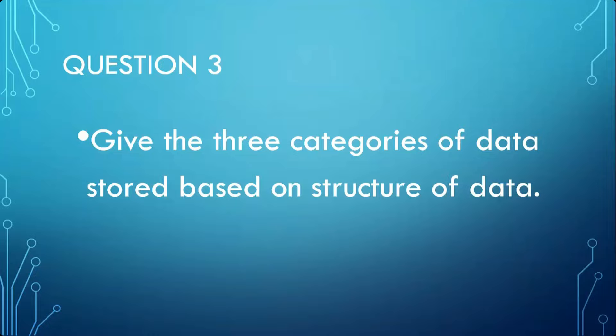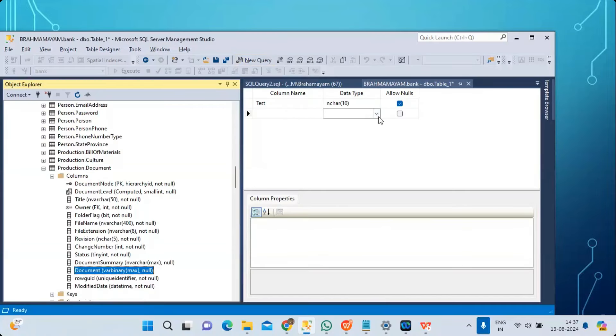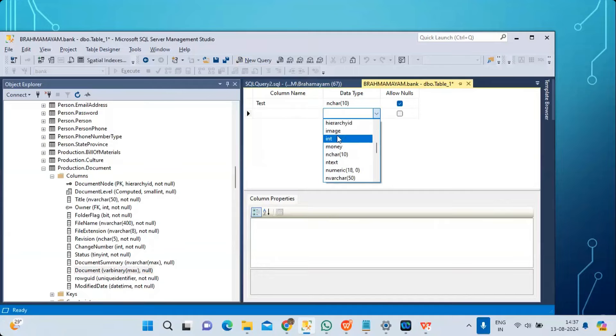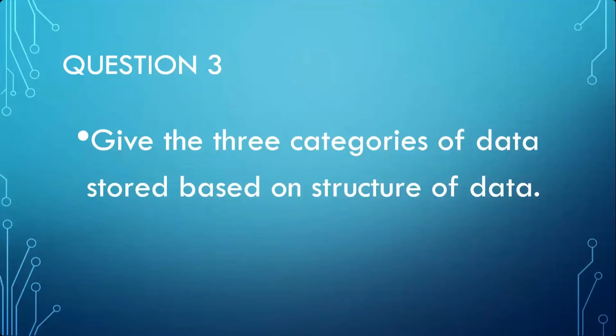So three categories: first, structured — rows and columns with strong types and a defined structure. Second, semi-structured — example is XML, good for online form data. Third, unstructured — example is document or image. All three types of data can be stored in SQL Server. Unstructured data is stored as IMAGE or VARBINARY. This is the answer to the third question.